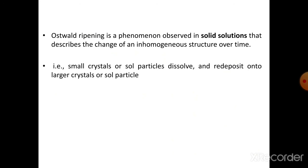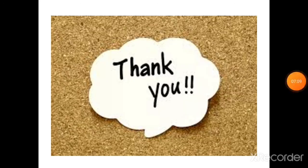Ostwald ripening is a phenomenon observed in solid solutions that describes a change in inhomogeneous structure. Because of this crystal growth, a change in the inhomogeneous structure of the solid solution is observed — small crystals or solid particles dissolve and redeposit onto large crystals. This is known as the Ostwald ripening phenomenon, which is an instability problem of pharmaceutical suspensions.